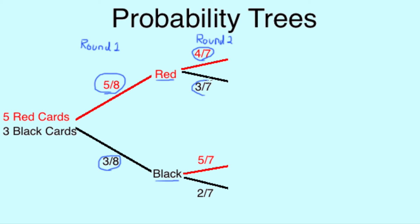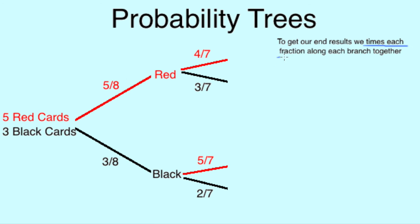When all is done, we end up with our Probability Trees like this. Now, to find each branch, we simply multiply each fraction on that branch by the next.